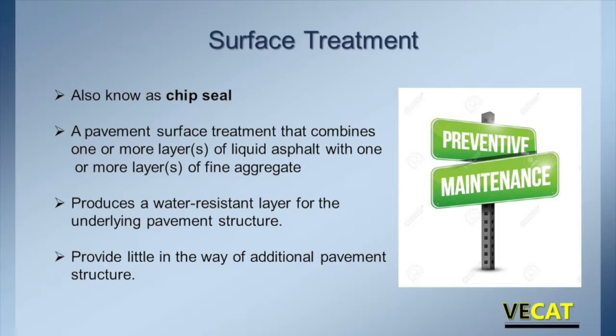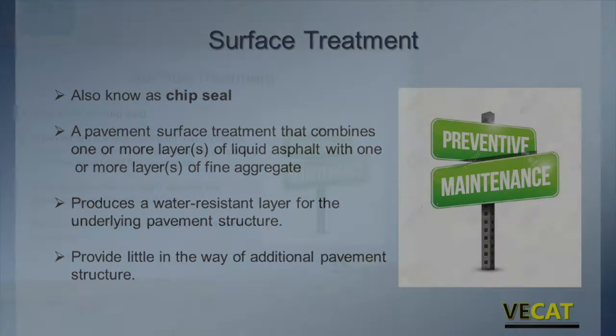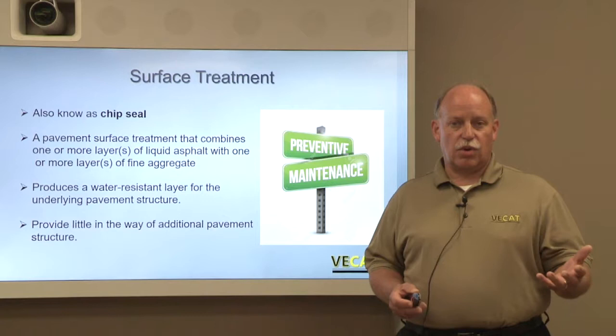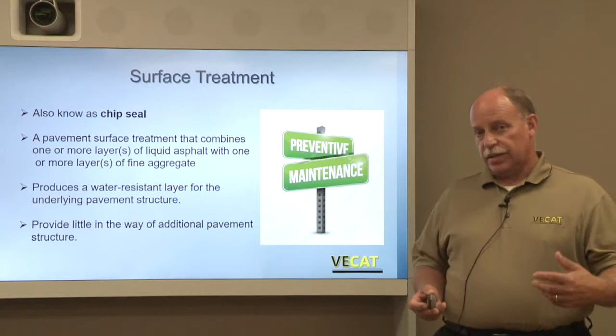You'll see that there are multiple layers of these types of material being applied. Their purpose is to provide a water-resistant layer to the pavement structure. They're there purely as a preventive maintenance treatment — to seal off that roadway surface so that water doesn't penetrate and do damage to the pavement structure. But keep in mind, they provide little or no structural value to the pavement structure.